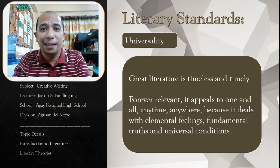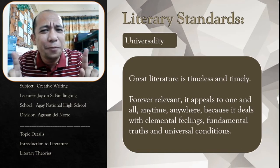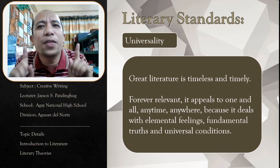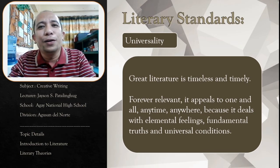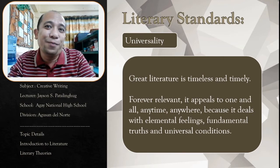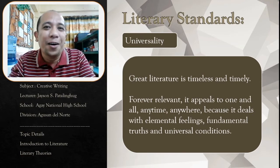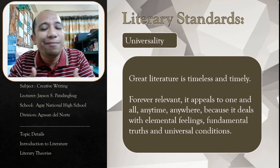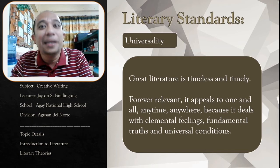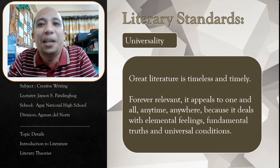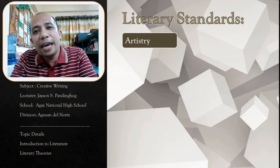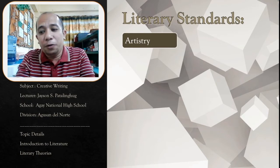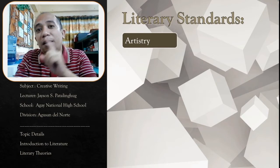Another very popular universal theme across all types of literature is the love story. The topic of love — when that becomes a subject, everybody can relate about it. The second standard or characteristic of a literary piece is artistry. Literature is not just any printed material, but it is the quality that appeals to our sense of beauty.